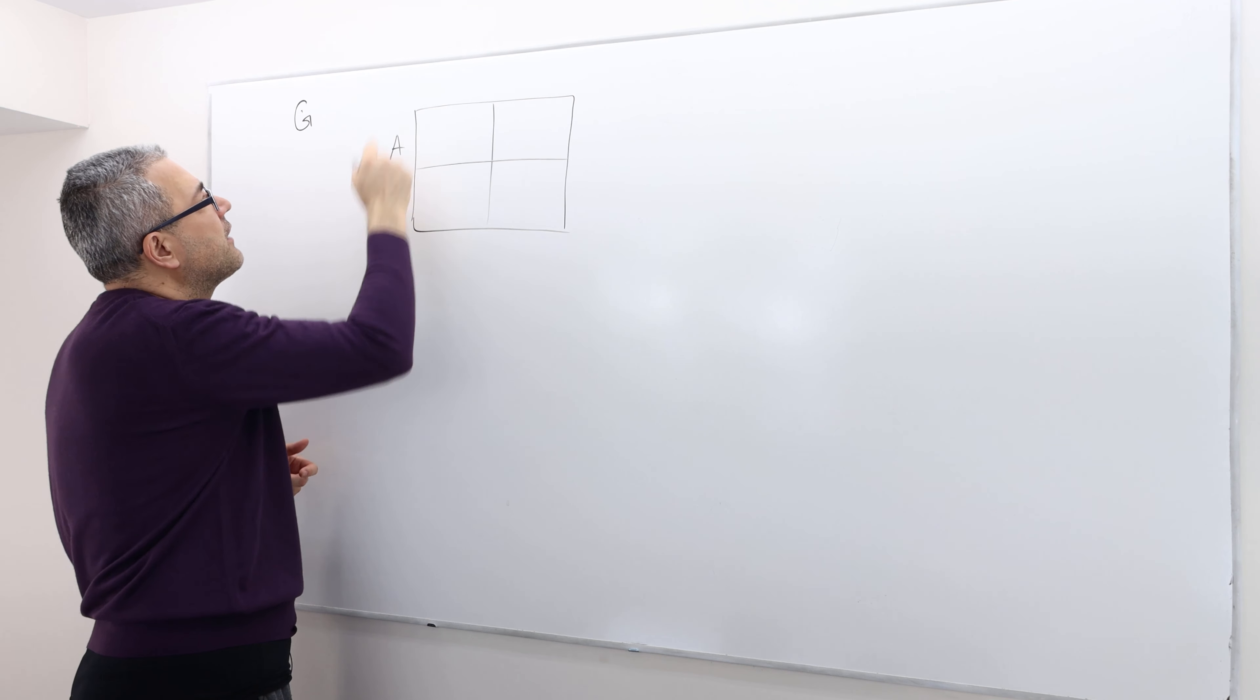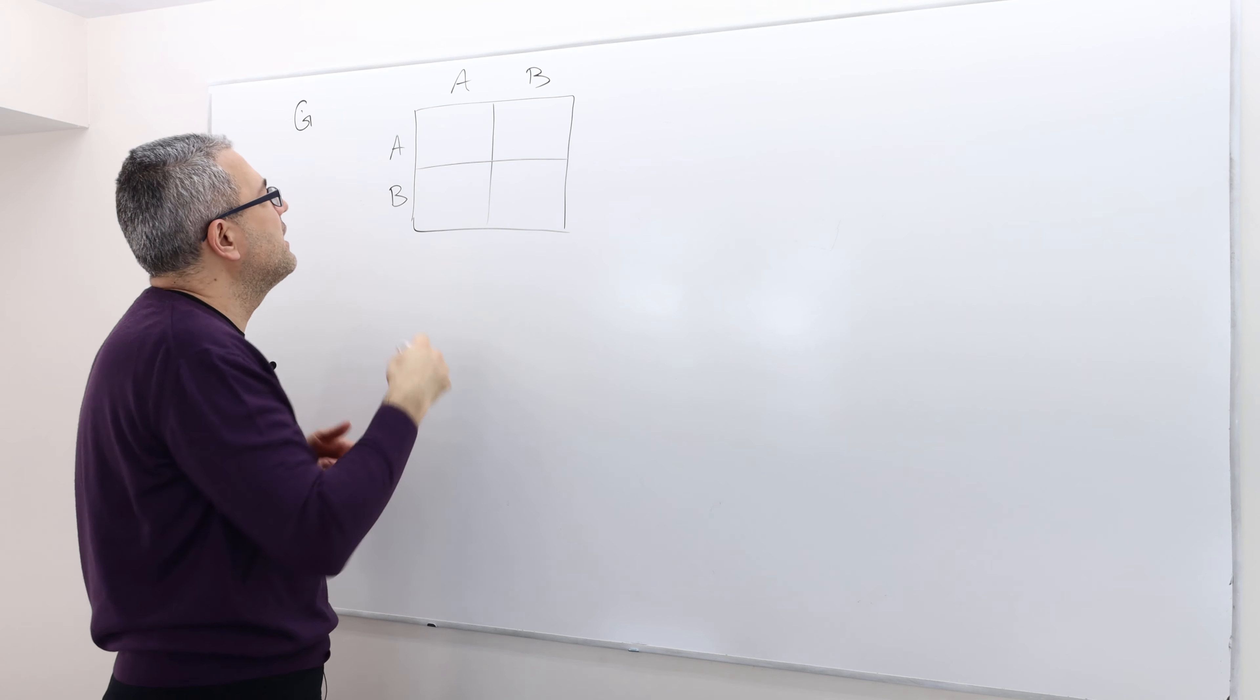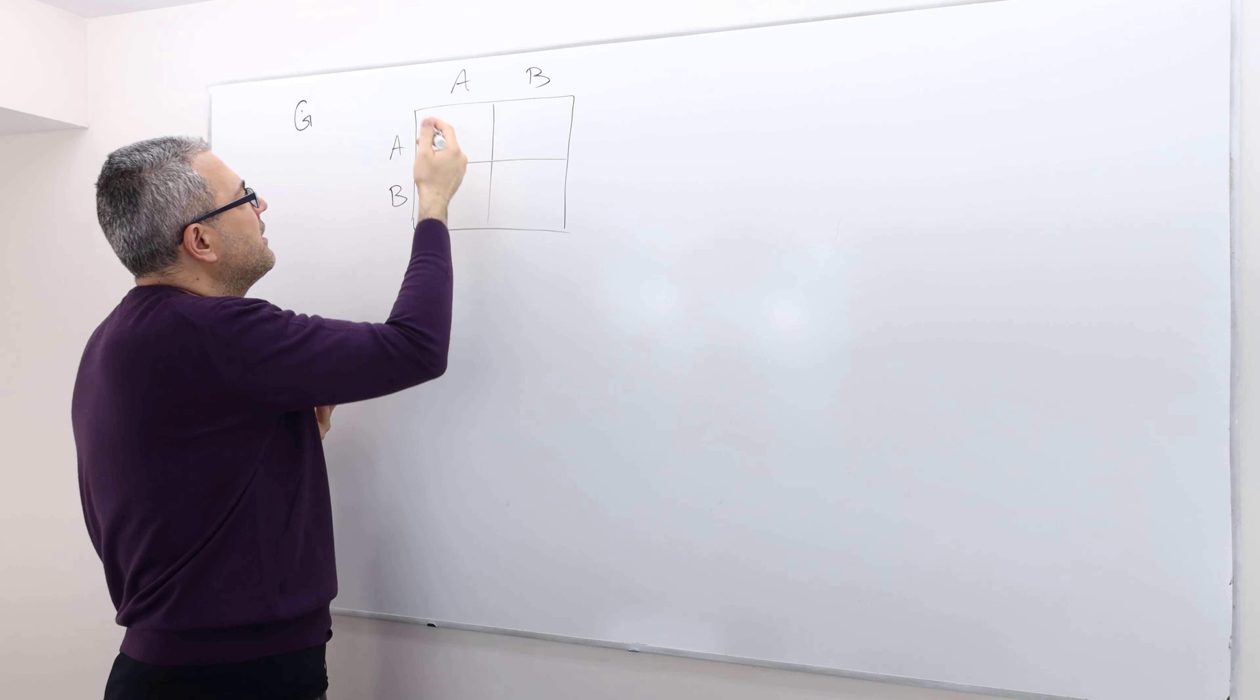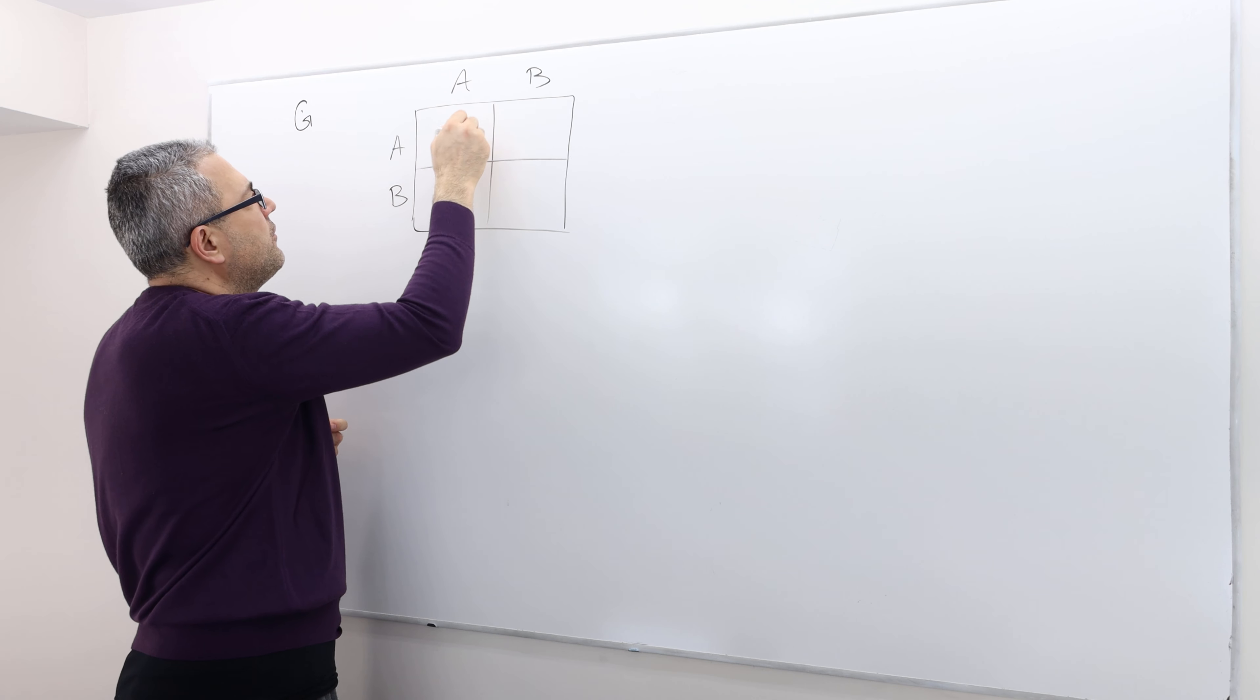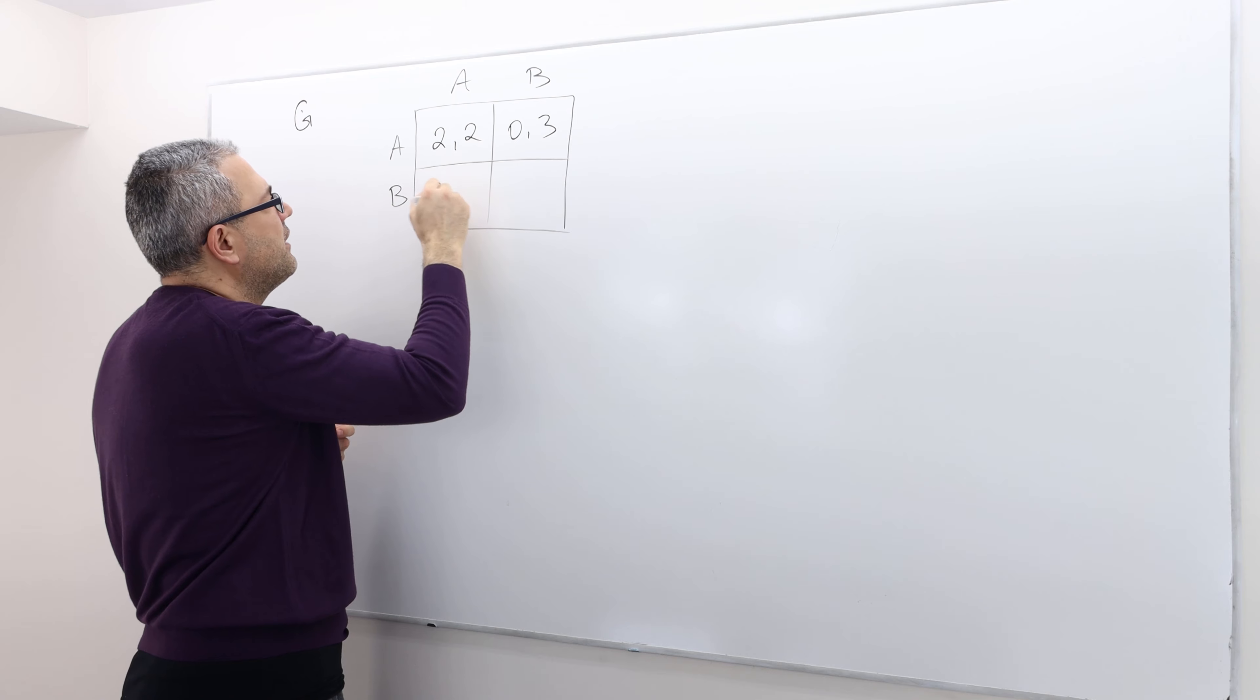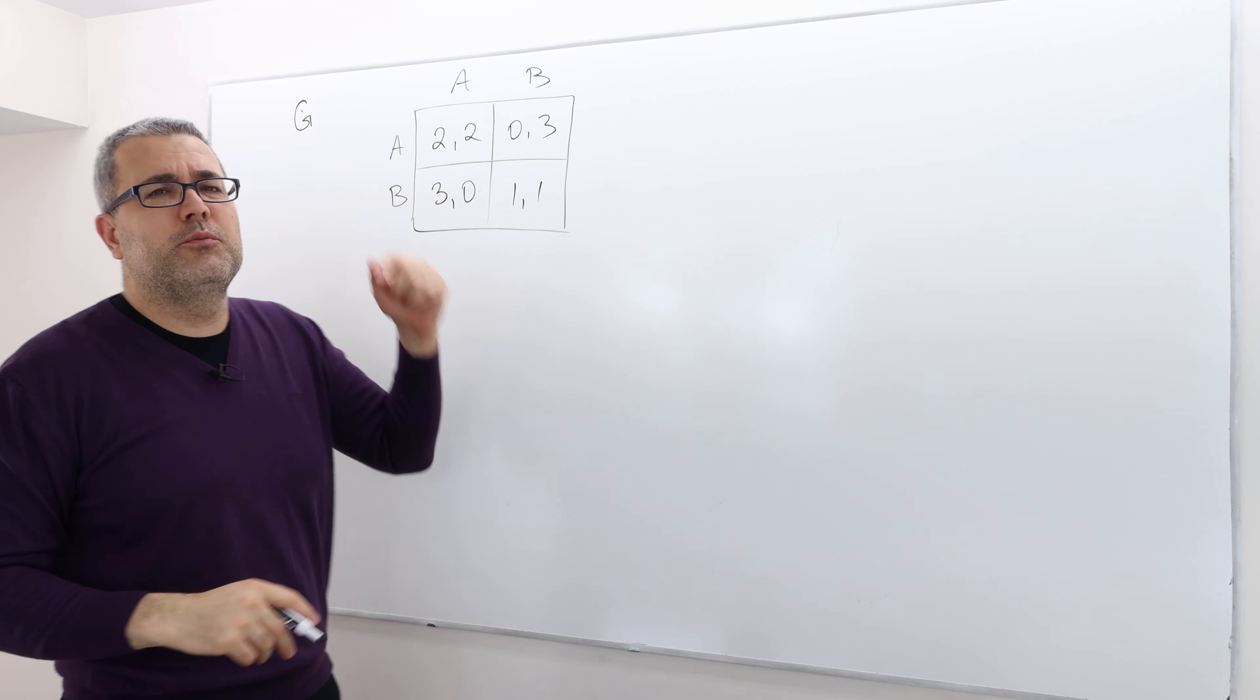So let's say each player has two strategies, A and B, and then some payoffs. But let's say it's a prisoner's dilemma, okay? So it's like two, two, zero, three, three, zero, and then one, one. So we know that the Nash equilibrium is BB.